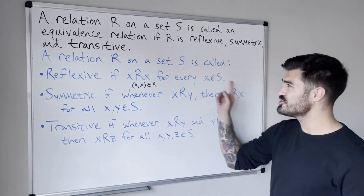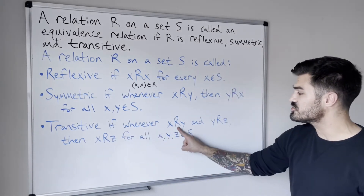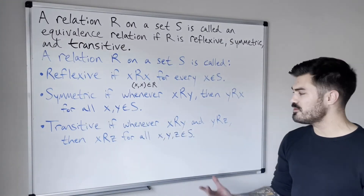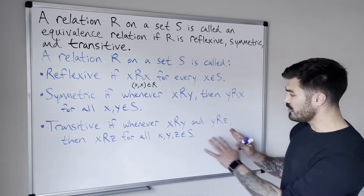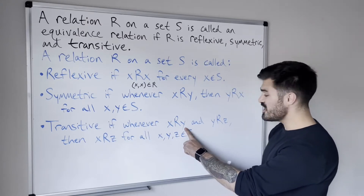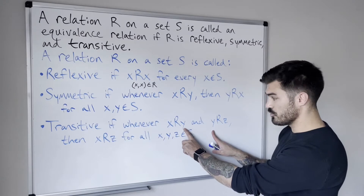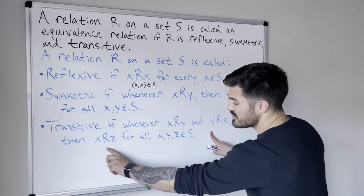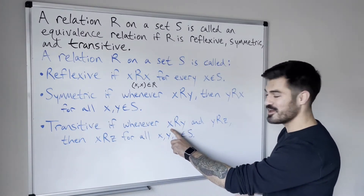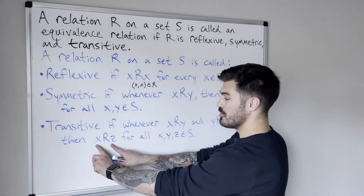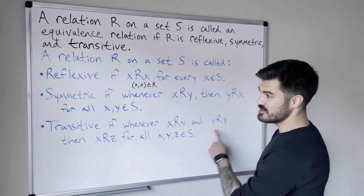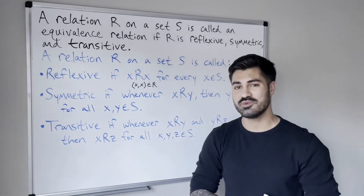Transitive: a relation R on a set S is transitive if whenever X is related to Y and Y is related to Z, then X is related to Z. So we go to our relation and we look at all these cases where the second coordinate of an ordered pair is the same as the first coordinate of another ordered pair. Then we check to see if, in that relation, we have another ordered pair that has the first coordinate of the first pair and the second coordinate of the second pair. If that's the case for every such X, Y, Z, then we say the relation is transitive.